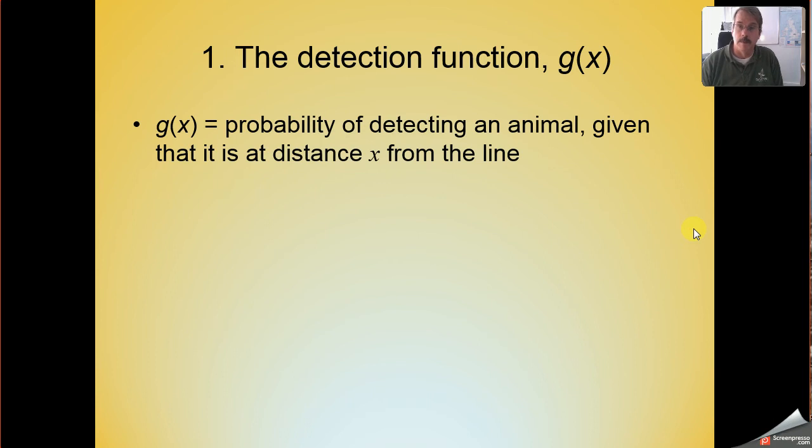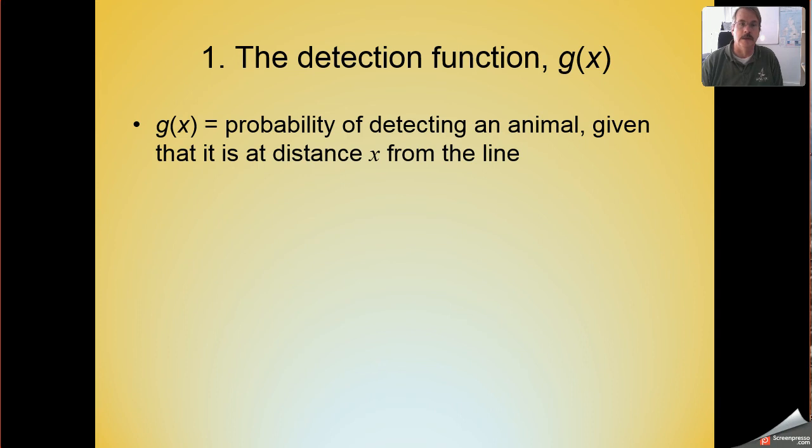To review, I'll remind you of the detection function, g(x), defined as the probability of detecting an animal conditional upon the fact that the animal is at distance x from the transect.